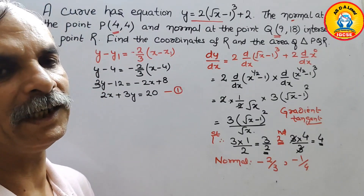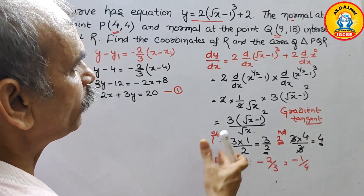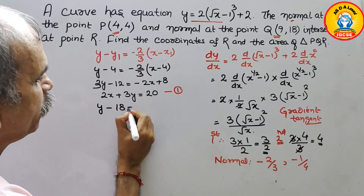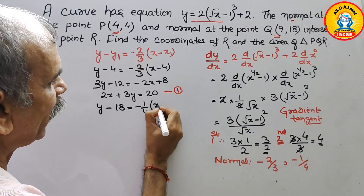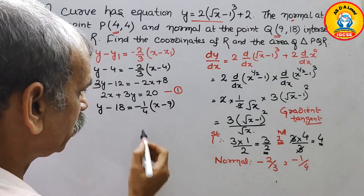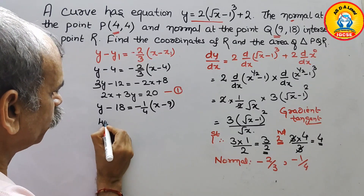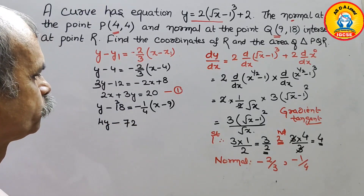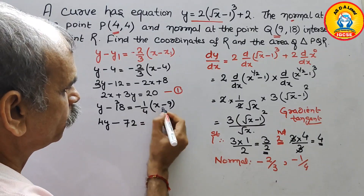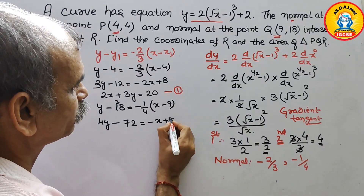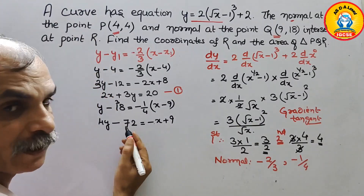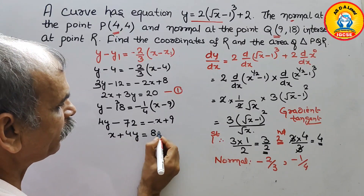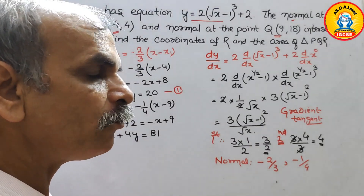For the second normal at Q(9, 18) with gradient -1/4: y - 18 = -1/4(x - 9). Multiplying through by 4: 4y - 72 = -x + 9. Rearranging gives the second equation: x + 4y = 81.